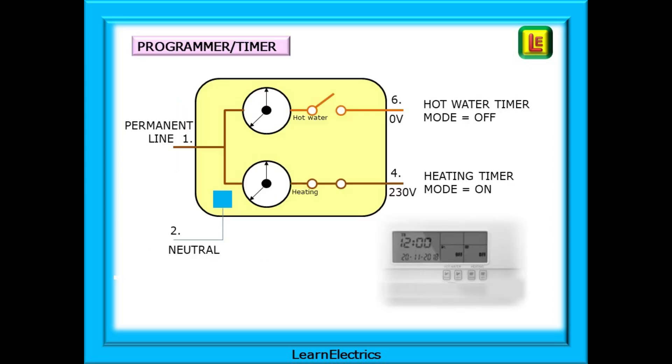The programmer or timer is supplied with a permanent 230 volts but will only output a voltage to one or both thermostats when the timer function reaches an on period. Here we have shown the hot water timer as off so the microswitch is open and the central heating timer is on and the switch is closed.